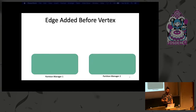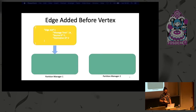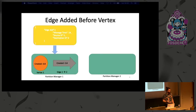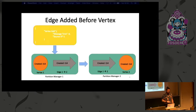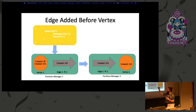What happens if an edge gets added before we get a vertex? In this case, we can create both objects — the vertex actually just becomes a placeholder. We synchronize and do everything exactly the same. And then if the vertex add comes in at a later point, we just slot that into the history behind. So if this comes in with all the properties and interesting metadata about that vertex, it can be inserted at that point.